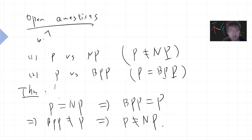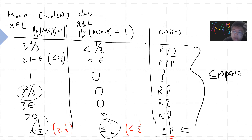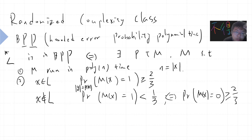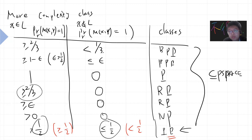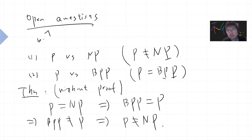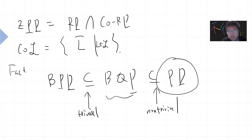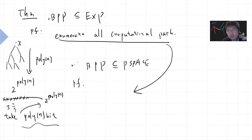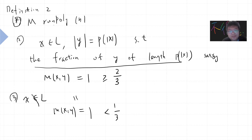Equivalently, if BPP does not equal P, then P does not equal NP. This is a very hard non-trivial proof. This concludes my short introduction to randomized complexity classes. Next time I may talk about circuit complexity and connect it with PP, and also the polynomial hierarchy. I want to first set up the different complexity classes, and in future videos start to build theorems connecting all these crazy complexity classes.